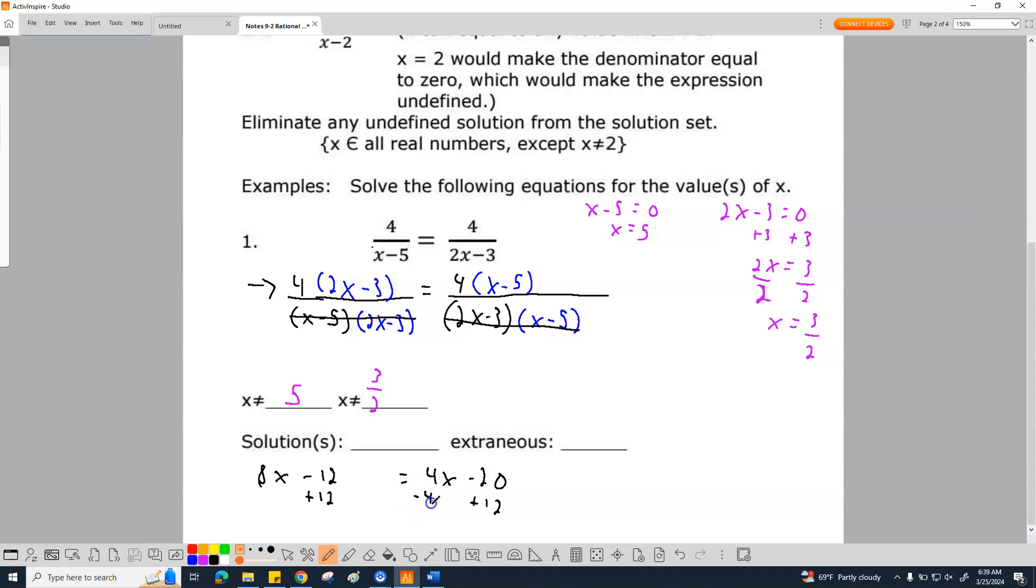And then I'm going to subtract my 4x as well on both sides at the same time. And again, if you're lost, it's a regular equation. That's all I'm doing at this point. So 8x minus 4x is 4x. Negative 12 plus 12 is 0. That cancels out. So that's nice. And then 4x minus 4x cancels out. That's nice. And then negative 20 plus 12 is negative 8, which gives me x equals negative 2 for my answer. So I found x equals negative 2 for all of this.